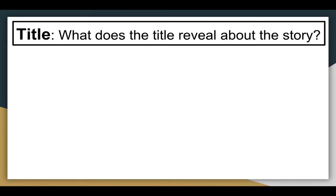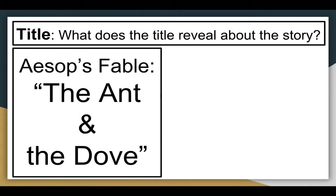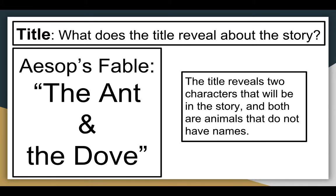First, we're going to look at the title and see what it reveals about the story. The title is The Ant and the Dove, and this doesn't give us a ton of information, but it reveals that there are two characters in the story. Both are animals and they do not have names. Authors tend to use nameless or generic characters to imply that the message or theme can connect to anyone and everyone, to all readers alike.